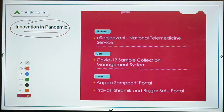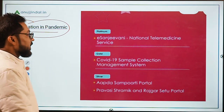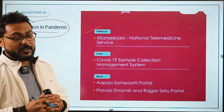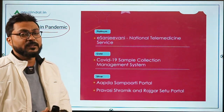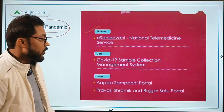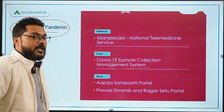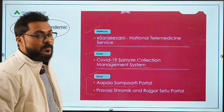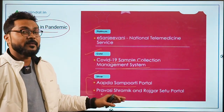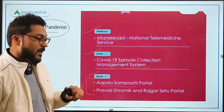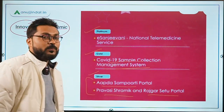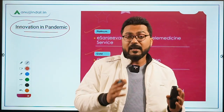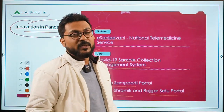In the first category, Innovation in Pandemic: Platinum was given to E-Sanjeevni, the National Telemedicine Service, which worked very effectively during the lockdown. Gold went to the Covid-19 Sample Collection Management System. Silver went to the Aapda Sampoorti Portal of the Bihar Government for Disaster Management, and the Pravasi Shramik and Rojgaar Setu Portal of the Madhya Pradesh Government, which facilitates registration and identification of migrant and other laborers.